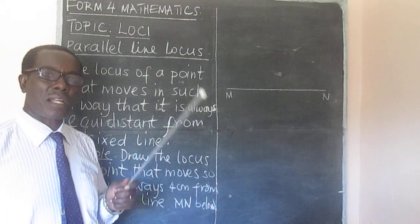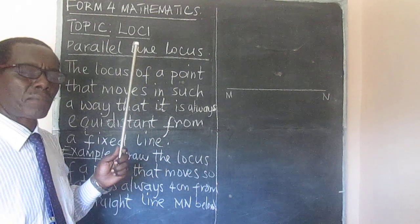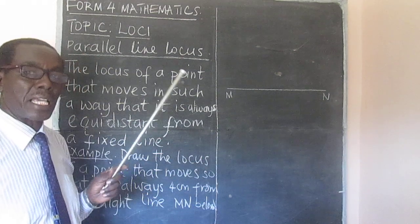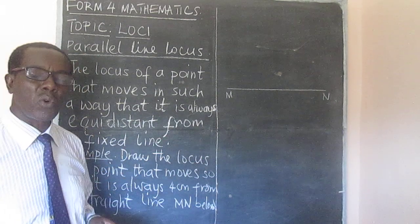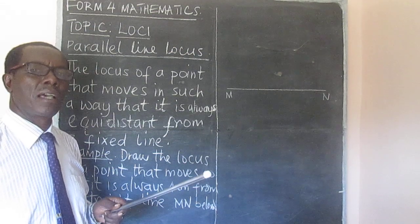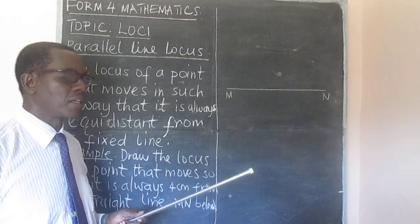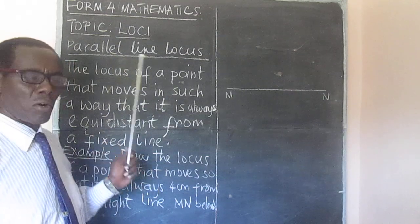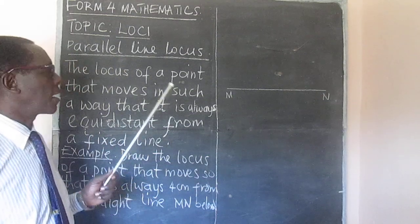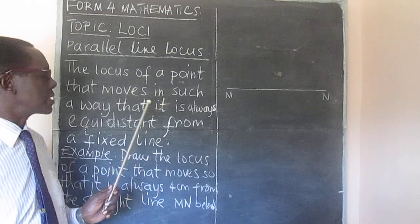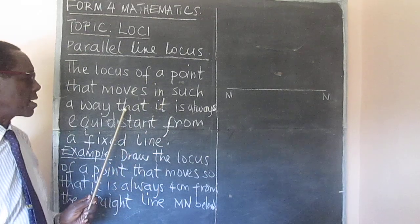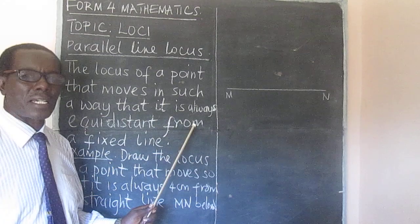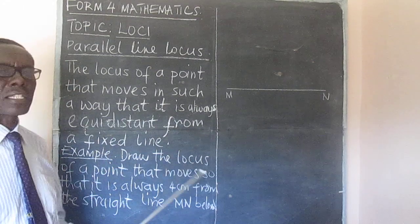In that lesson, we talked about the locus of a point that moves in such a way that it is always equidistant from another fixed point. Today, we want to look at the locus of a point that moves in such a way that it is always equidistant from a fixed line.